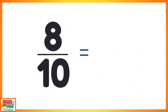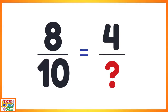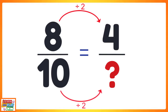This time our starting fraction is eight tenths. If we were to find the equivalent fraction that had a numerator of four, what would the denominator be? To work this out, we must look at the relationship between the numerators. To get from the number eight to the number four, we must divide it by two, because eight divided by two will give you four. If we divided the numerator by two, we must do the same to the denominator. So ten divided by two is five. Now we know that the equivalent fraction of eight tenths is four fifths.